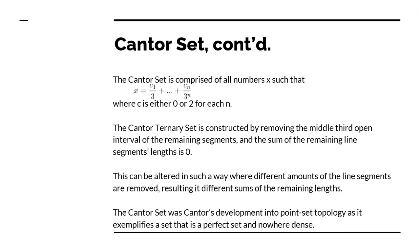You can construct different sets comprised of different numbers and points depending on how much you remove from the set. You could effectively remove anywhere from just above zero to just below one hundred percent of each iteration. Otherwise, you'd get either a completely empty set or the entire interval from zero to one.